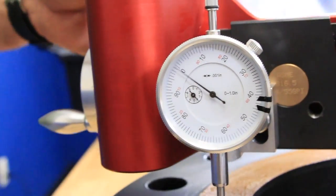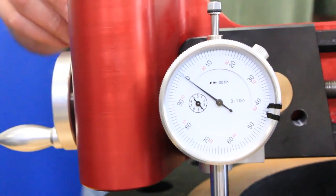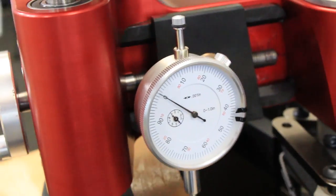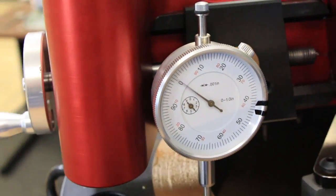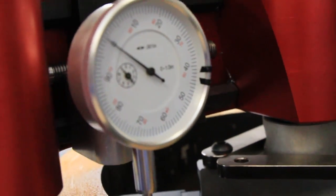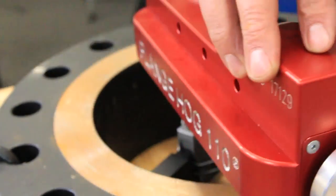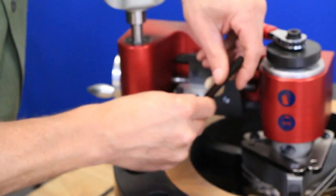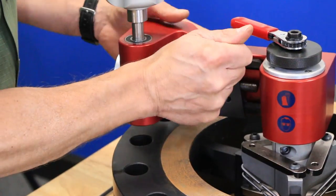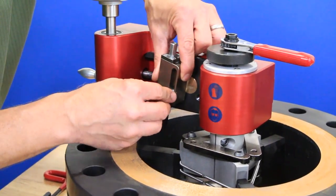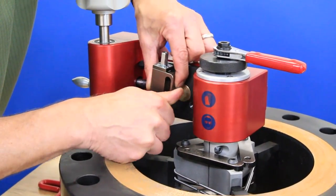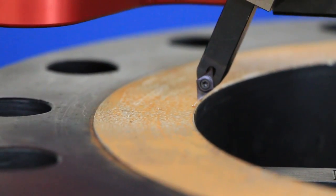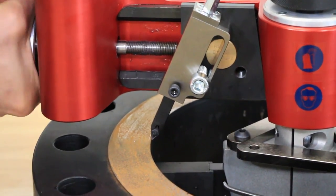This step can take some getting used to and will vary depending on flange condition and material, but obviously we want the reading to be as close to zero as possible when we make a full rotation. Now that the Flange Hog has been indicated and squared, we will remove the indicator and attach our tool post assembly insert and insert holder. Set up with these components on the larger flanges is the same as in our first example, but we do suggest checking the travel of the carriage once the tool post assembly is attached to make sure that there is no interference between the tool post assembly and the body from angled positioning.